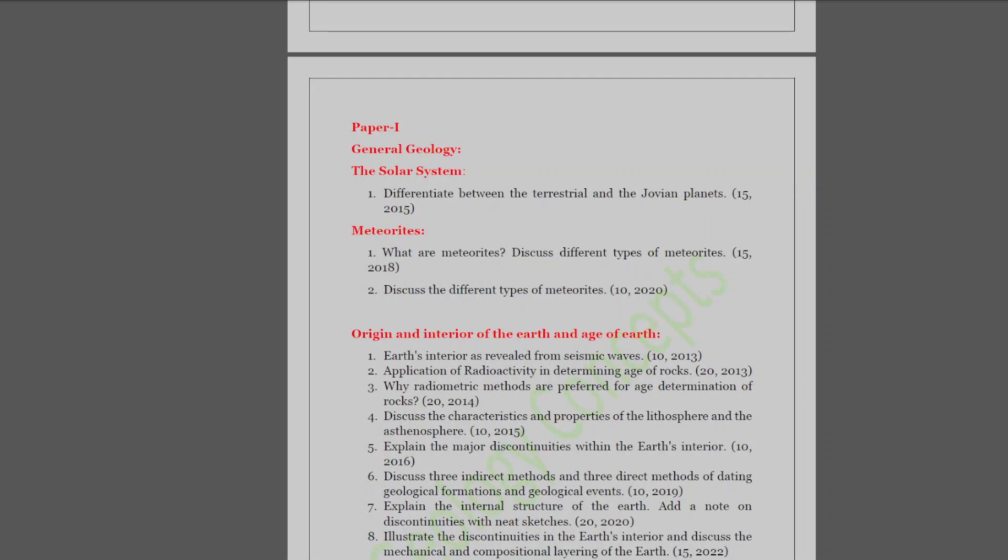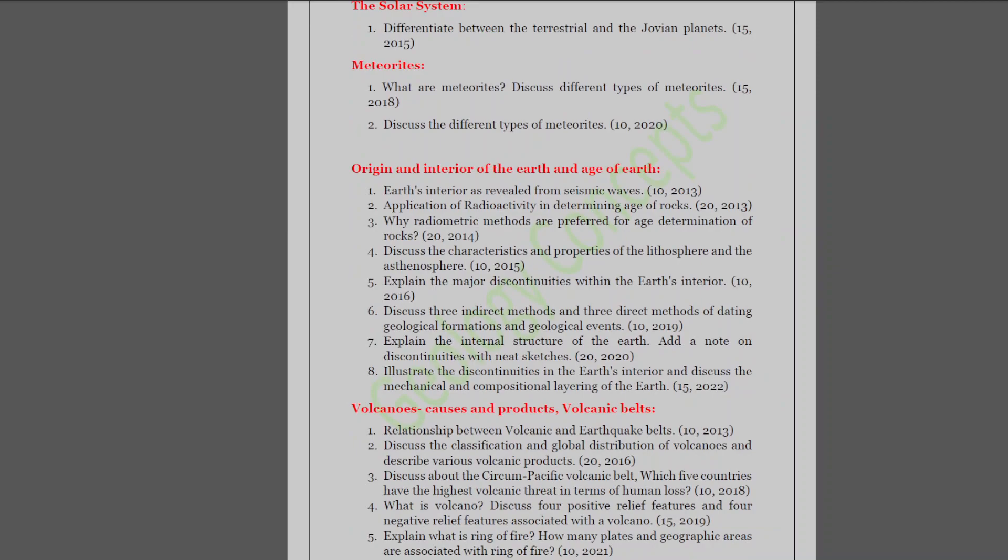Then the next topic is origin and interior of earth and age of the earth. Most of the questions are directly asked related to different layers of the earth, their properties and different discontinuities inside the earth. Questions on the age of the earth are more focused on radioactive methods as they provide definitive evidence. Indirect methods are also asked once in 2019. If you know glacial varve, sedimentation rate, salinity clock, etc., these are indirect methods. Here is a pattern you can observe. In every consecutive year there will be either two consecutive questions from the internal structure, as you can see in 2015-2016 and 2020-2022, or two consecutive questions from the age of the earth, as in 2013 and 2014. So I would say there is a high probability of a question from the age of the earth that might be asked this year.